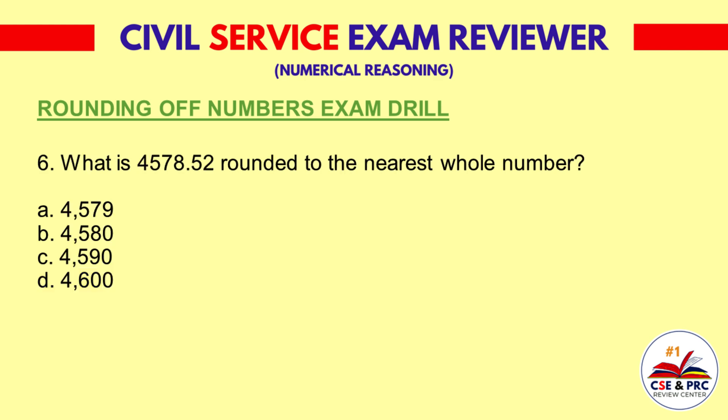Question 6: What is 4,578.52 rounded to the nearest whole number? A. 4,579, B. 4,580, C. 4,590, D. 4,600. The answer is A: 4,579.